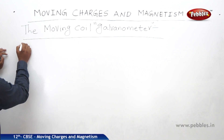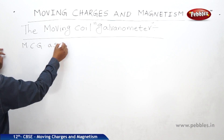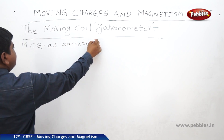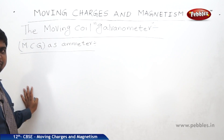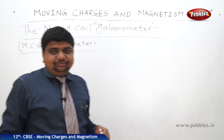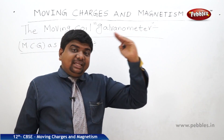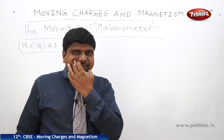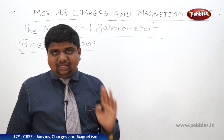Now we'll see MCG as a meter, where MCG is Moving Coil Galvanometer. An ammeter is a device used to measure current. By applying Ohm's law, I = V/R. If V is constant, we get I proportional to 1/R.